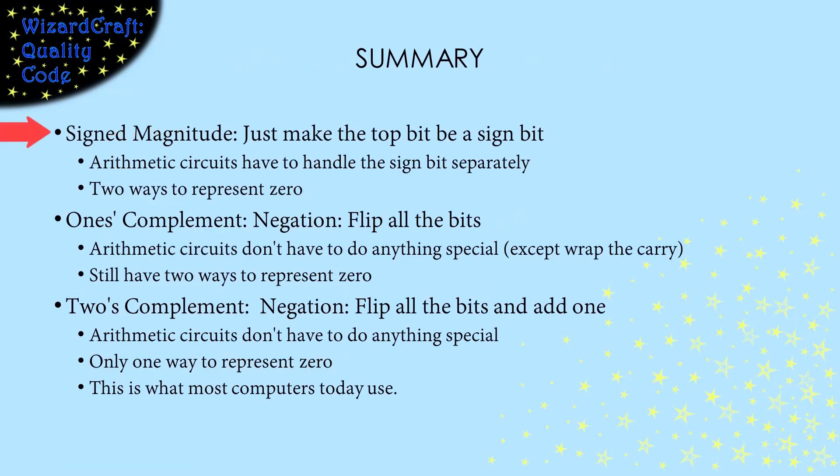So, we have 3 ways of storing signed numbers. Signed magnitude just uses the top bit to signify if the number is positive or negative. That requires special circuitry to deal with negative numbers and has 2 ways to represent 0. One's complement negates a number by flipping all the bits. With this, the need for special circuitry for addition is fixed, but we still have 2 ways to represent 0. Two's complement negates a number by flipping all the bits and adding 1. This also does not require special circuitry and has the advantage that there is only 1 way to represent 0. This is what most computers use today.